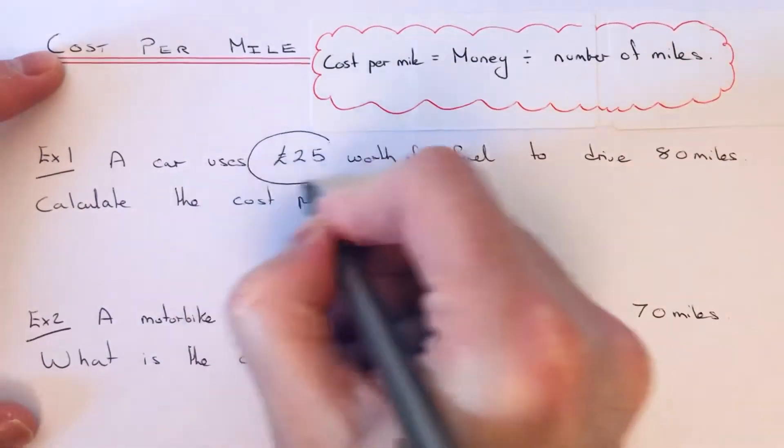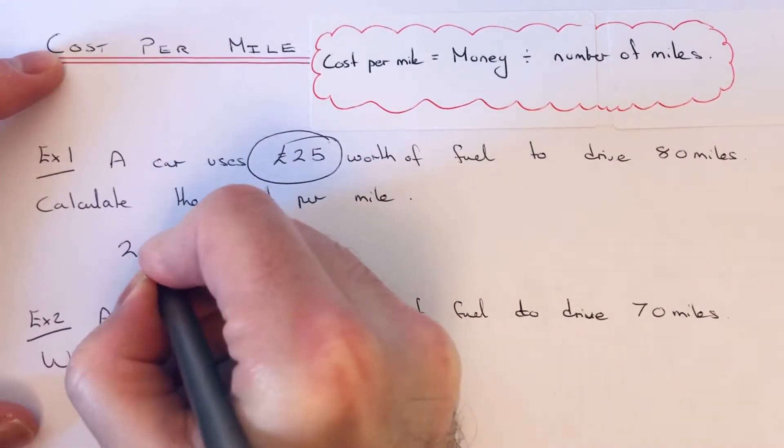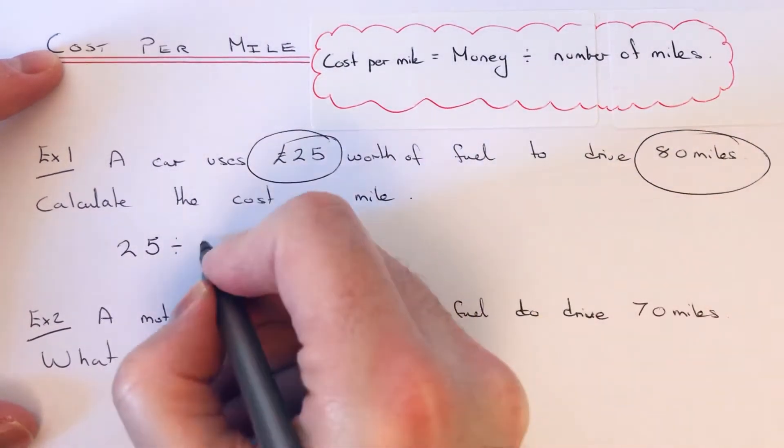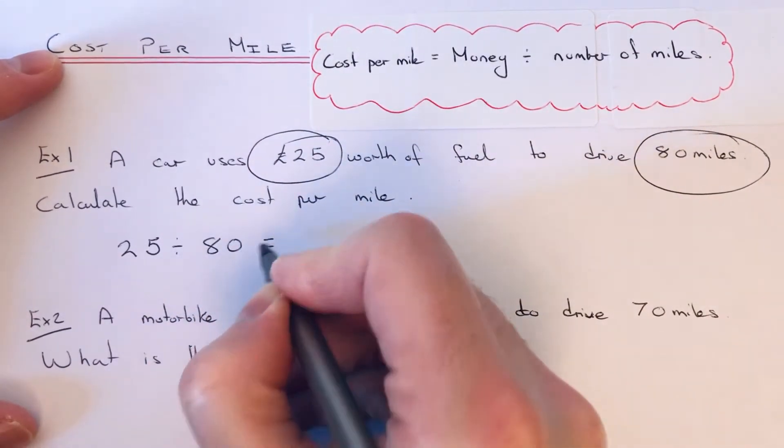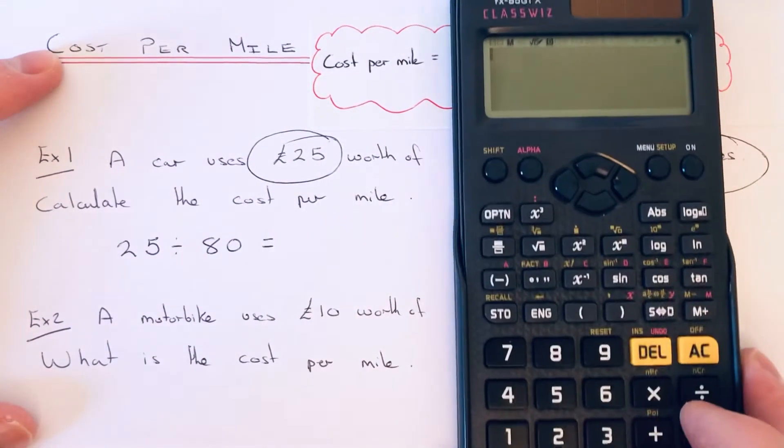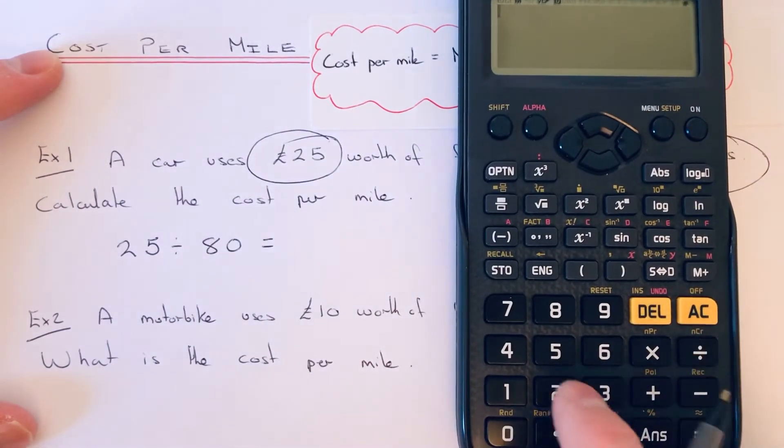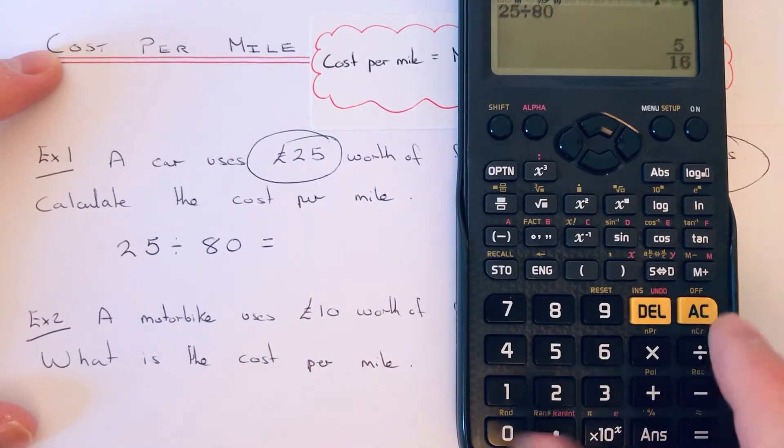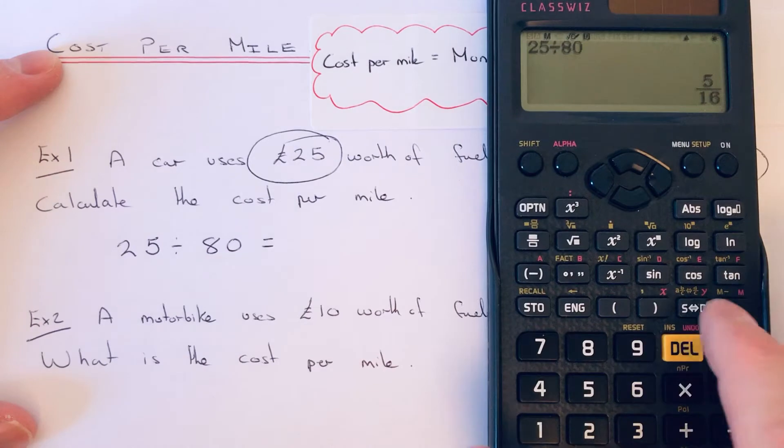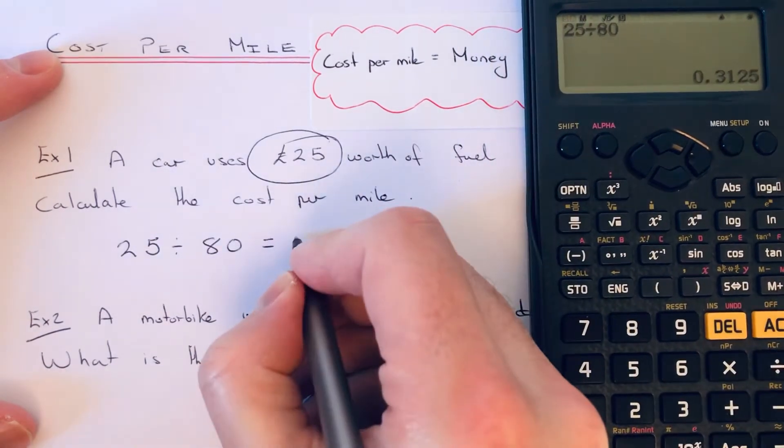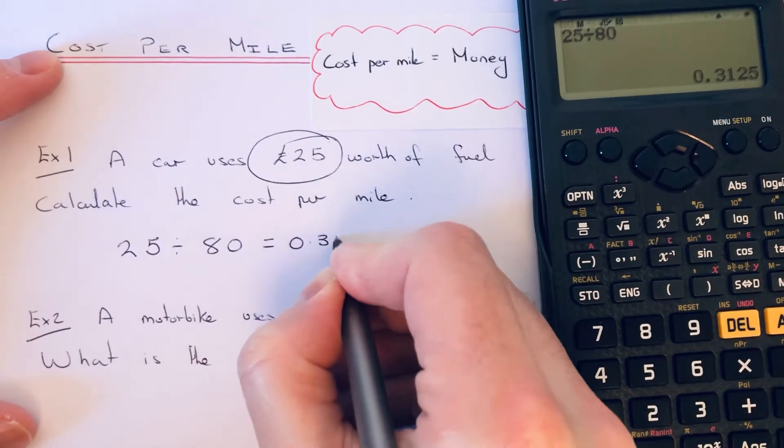We get the money which is £25 and we divide that by the amount of miles that the car travels. So we do 25 divided by 80. We get 0.3125.